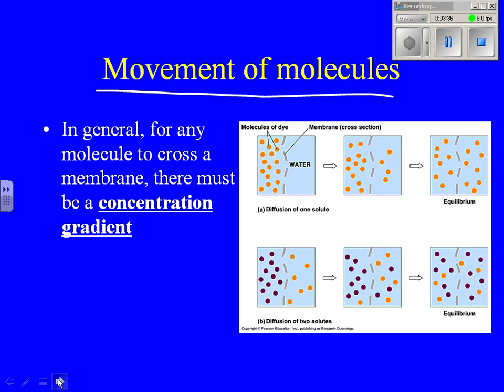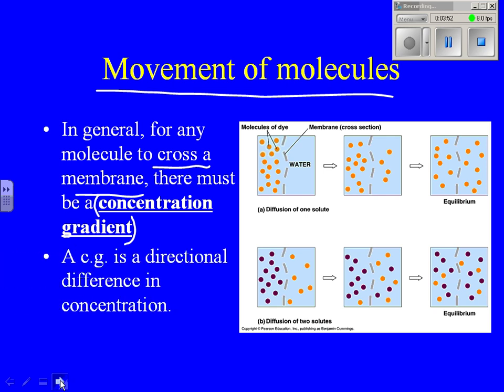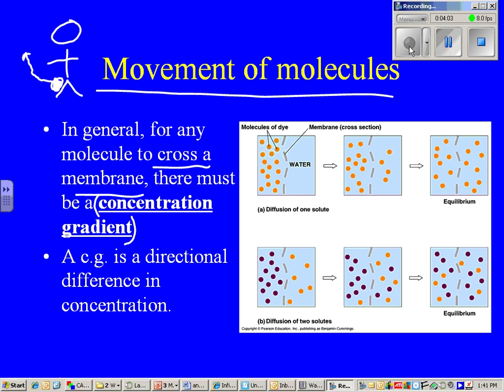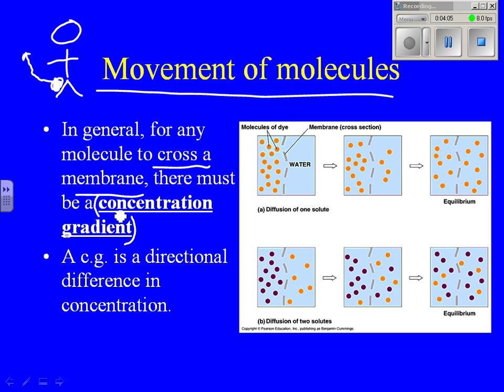In general, for any molecule to go across the membrane or for any molecule to move in a direction, there must be a concentration gradient. A concentration gradient is a directional difference in concentration. What does the word concentration mean in this case? What is concentration?